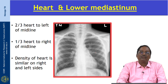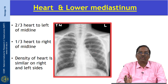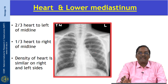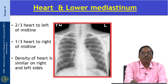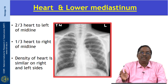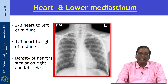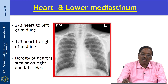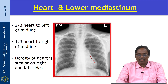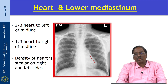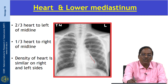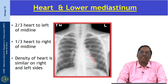Next, assess the heart and the lower mediastinum. The heart is positioned in the lower mediastinum — two-thirds of the heart is on the left side and one-third is on the right side. You have to compare the density of the heart; it should be equal on both sides. The right cardiac border is formed by the right atrium and the left cardiac border is formed by the left ventricle. When the right cardiac border is obliterated, you can suspect right middle lobe disease; when the left cardiac border is silhouetted, it indicates left lingular consolidation.